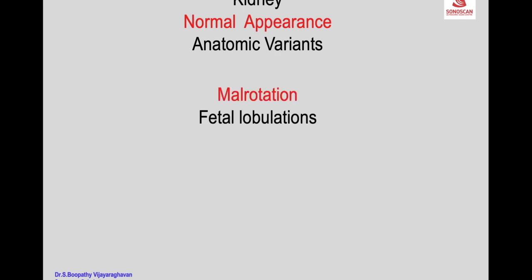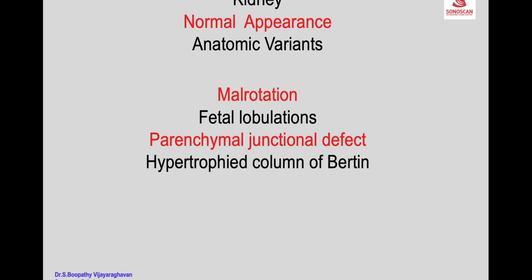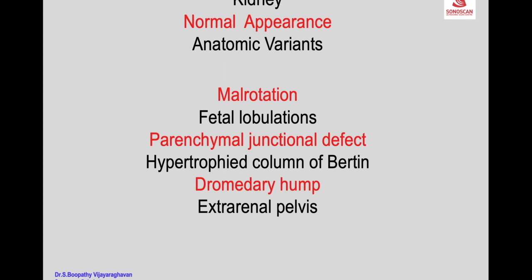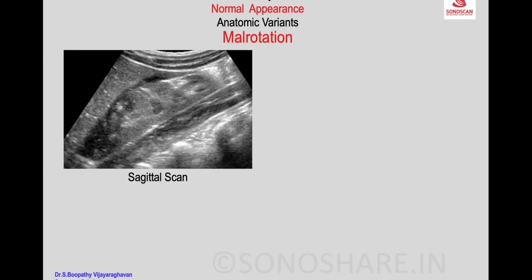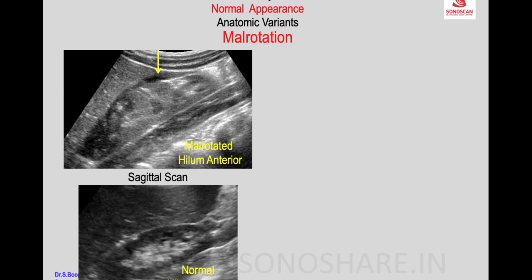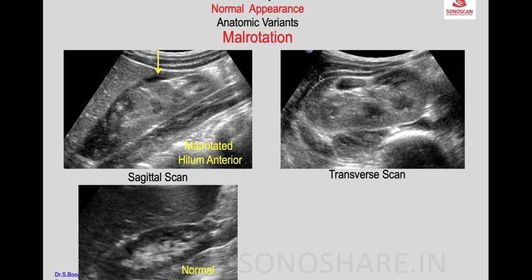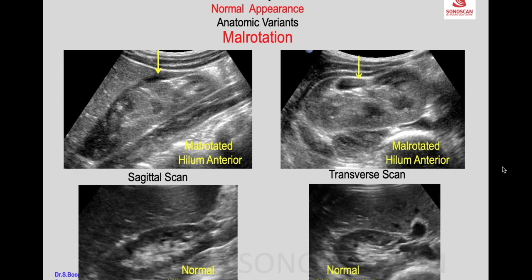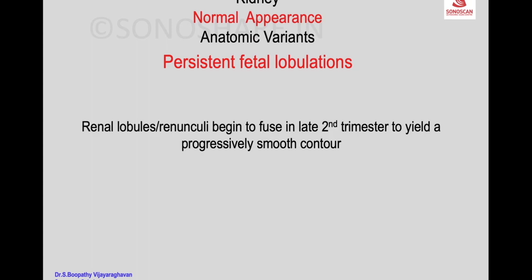Anatomic normal variants include malrotation, fetal lobulations, parenchymal junctional defect, hypertrophic column of Bertin, dromedary hump, and extrarenal pelvis. In malrotation, the sagittal scan shows the renal hilum anteriorly instead of medially, and in the transverse scan the hilum is also seen anteriorly instead of medially as it should normally appear.